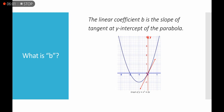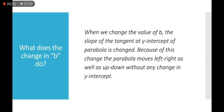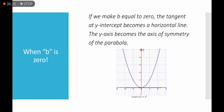The linear coefficient b is the slope of the tangent at the y-intercept of the parabola. When we change the value of b, the slope of the tangent at the y-intercept changes, causing the parabola to move left and right as well as up and down — but without any change in the y-intercept. When b = 0, the tangent at the y-intercept becomes a horizontal line, and the y-axis becomes the axis of symmetry.